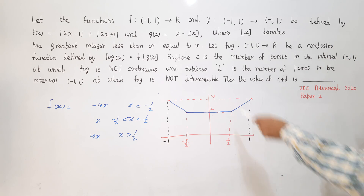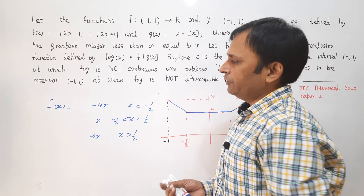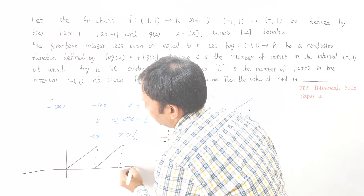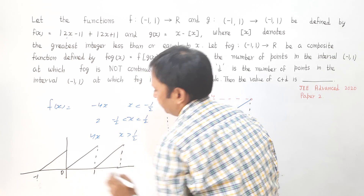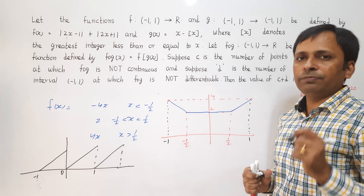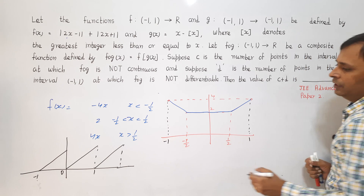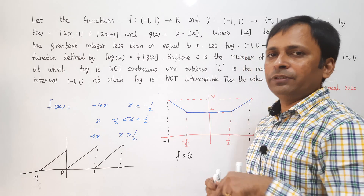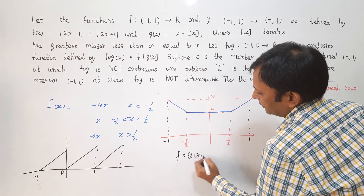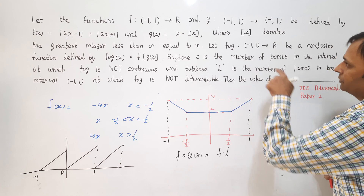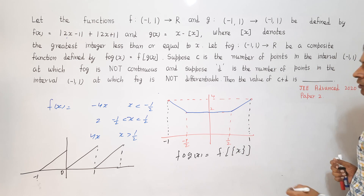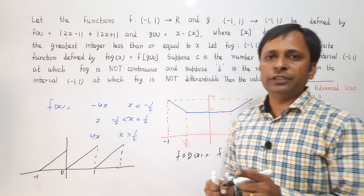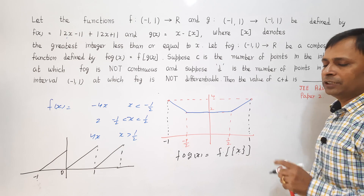Now let's look at g(x), which is the fractional part function. The fractional part function is periodic with period equal to 1. Using an important property: if g(x) is periodic, then the composite function fog is also periodic with the same period as g(x), which is 1.